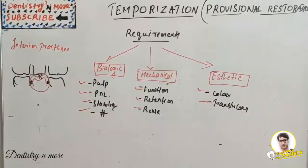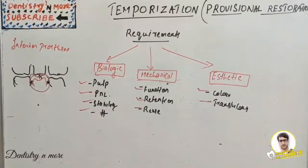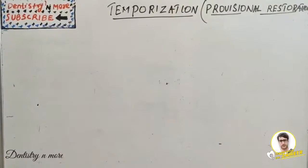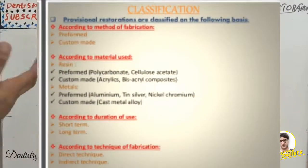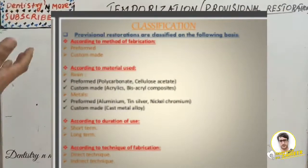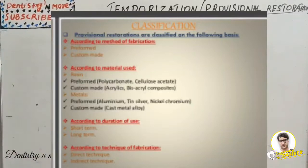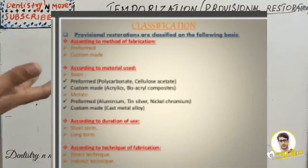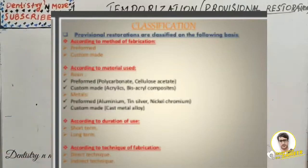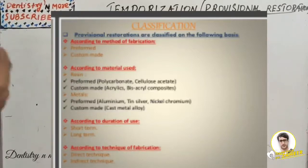Provisional restorations can be classified based on fabrication, material used, duration of use, or technique of fabrication. Based on fabrication, they can be preformed or custom made. Based on material, we can use resin — polycarbonate, cellulose acetate — or custom-made acrylics or bisacryl composites. In metal, we have preformed or custom-made options including aluminum, tin, silver, and nickel-chromium. According to duration, it can be short-term or long-term.